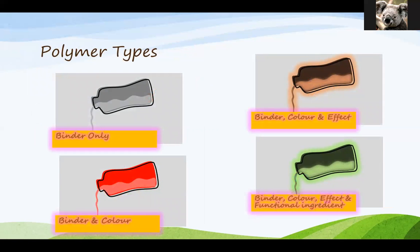There are different polymer types. We mentioned the binder only type. Within the range of seed coating polymers there are also other additives. We've mentioned the color already so you get binder and color mixed together. We also get binder, color and effect pigments all put together as well. More and more functional ingredients are being added into the polymer and these can be all sorts of things that we'll cover off in a bit.